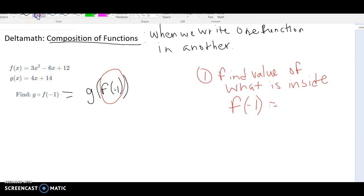So let me type that in. So I'm going to have three parentheses around that negative 1 because those negatives are tricky. 3 negative 1 squared minus 6x. But instead of x, I'm replacing negative 1 plus 12.